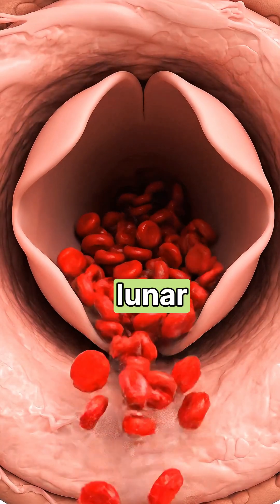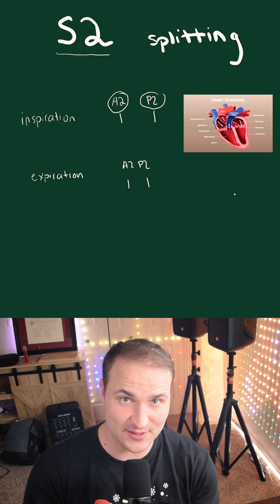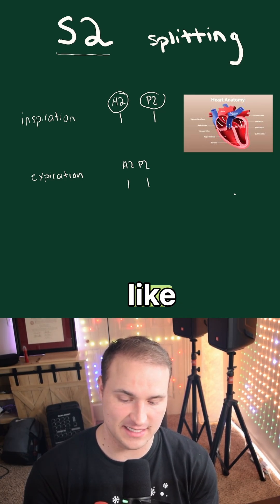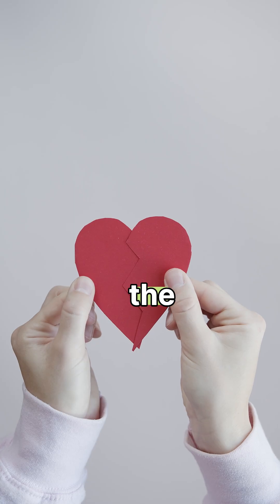S2 is the sound of the semilunar valves closing. So you have A2 and you have P2. A2 is the aortic valve closing, like the left side of the heart. P2 is the pulmonic valve closing. That's like the right side of the heart.